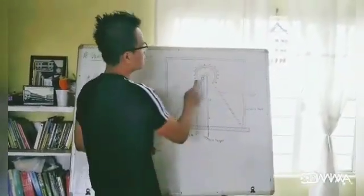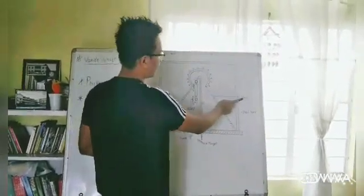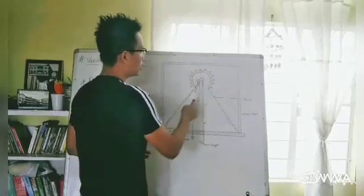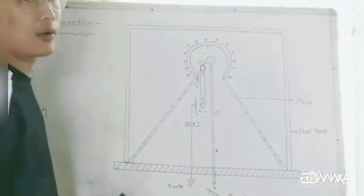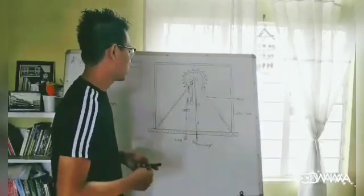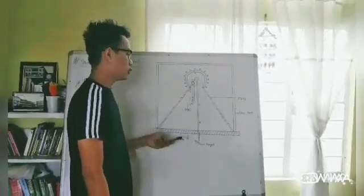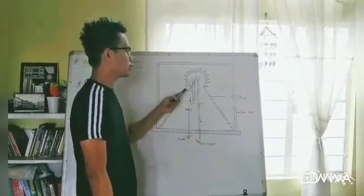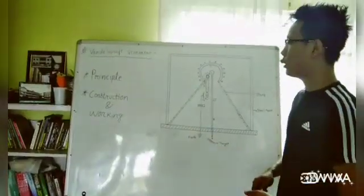It consists of a large conducting spherical shell S supported by a stand. Pulleys P1 and P2 run over a belt and are powered by an electric motor. A spray comb C1 is connected to a high voltage rectifier, while the collecting comb C2 is connected to the spherical shell S.